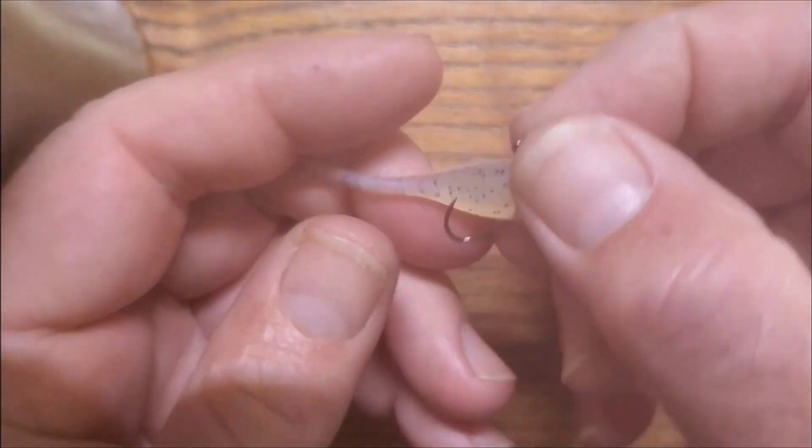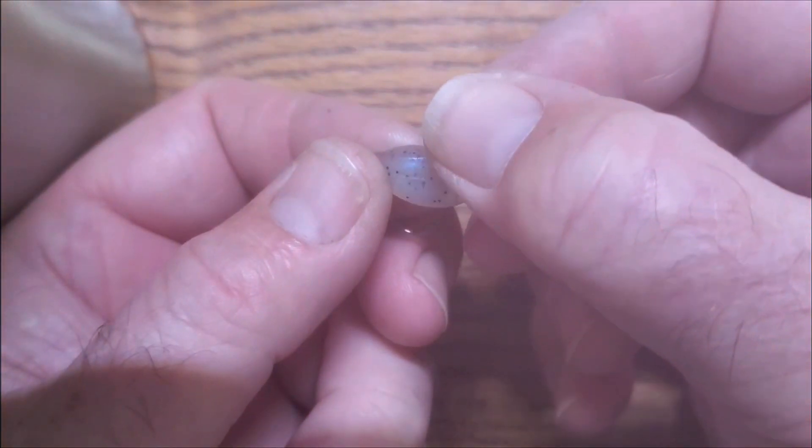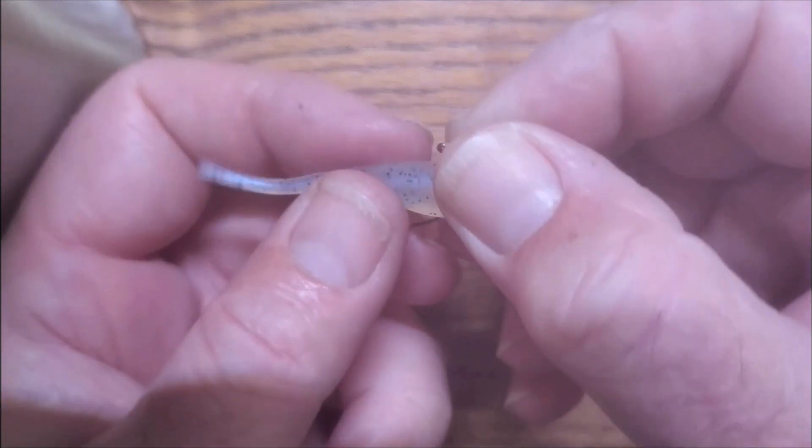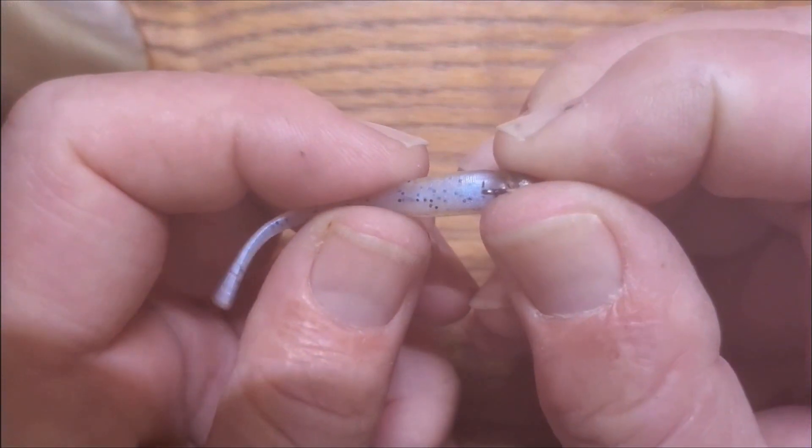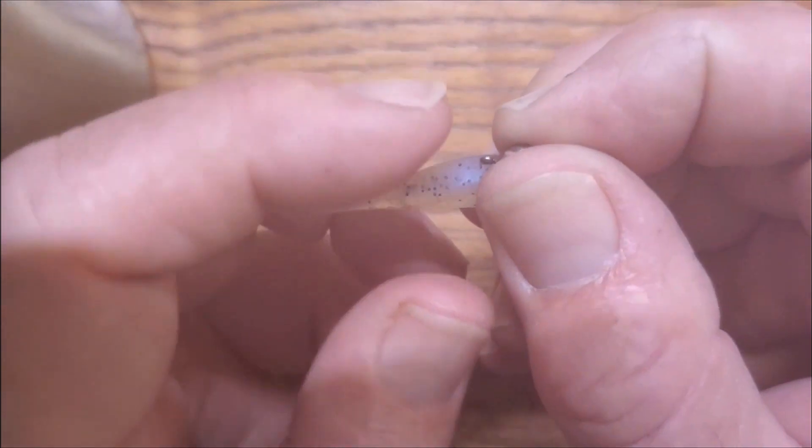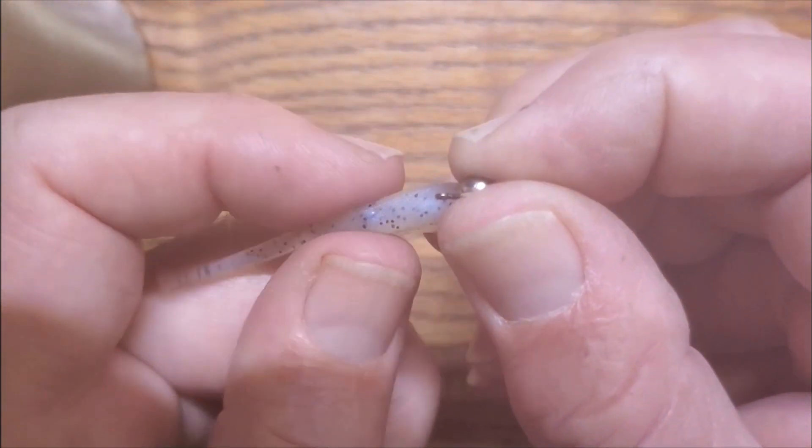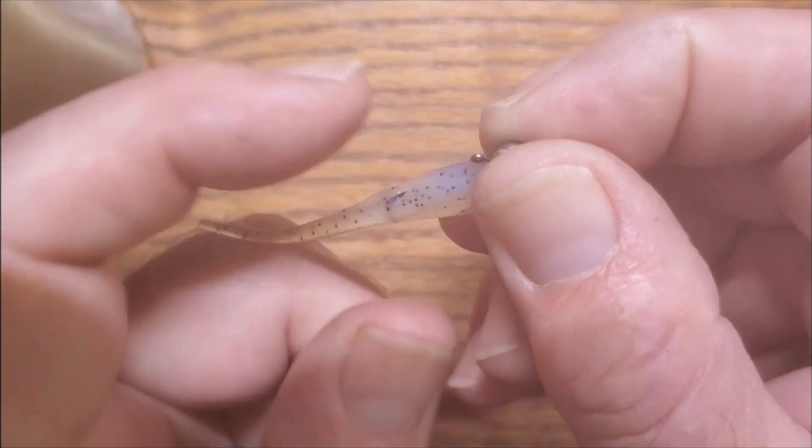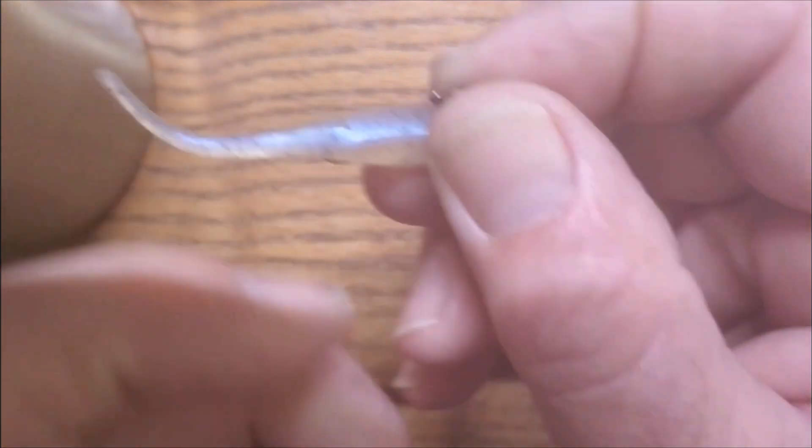We're going to take the hook and come out the belly, and we want to make sure it's center of the belly and center of the back. What I want to do is just break the skin. I don't want to push it all the way through. I just want to break it where I can barely feel that hook point.